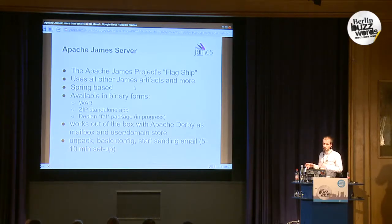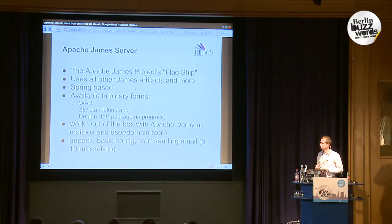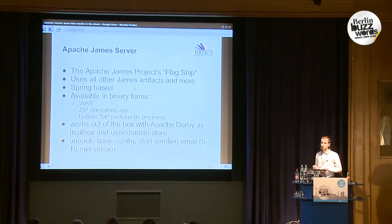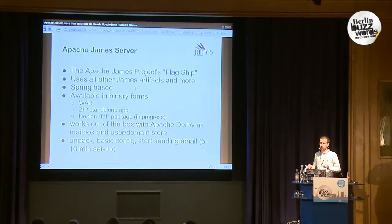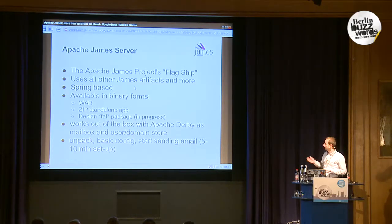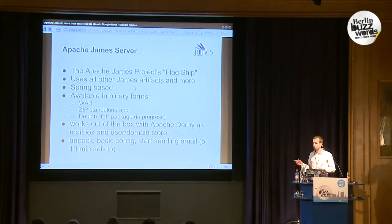The mailbox project can be used in your apps to map things to mailboxes and messages. It's used by the James server, which is the flagship of the Apache James project. James server binds all the pieces together and builds into an email server that supports IMAP, SMTP, and POP3, and can store your email messages into HBase or another relational database. It's pretty easy to work with — just download it, do a basic config, and you're ready to send emails with it.